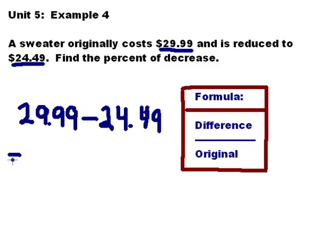When I compute the difference, I'm going to use my calculator and I'm going to punch in $29.99 minus $24.49 and I get $5.50 difference. That's my difference.